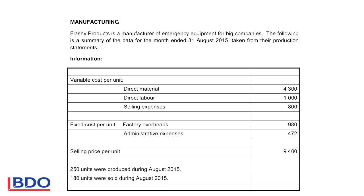Fixed cost per unit remains the same. So whether you produce a thousand articles or one thousand one hundred, the rent for the factory will be the same. The depreciation will be the same on the machines.